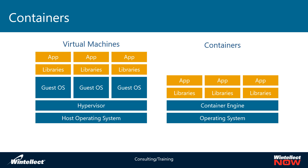With virtual machines, because you're doing hardware-level abstraction, the guest OS can be any OS — BSD, Linux, Windows, or different versions of Windows. Containers reduce overhead by essentially collapsing the OS down so the container shares the same operating system as the host running the container engine.